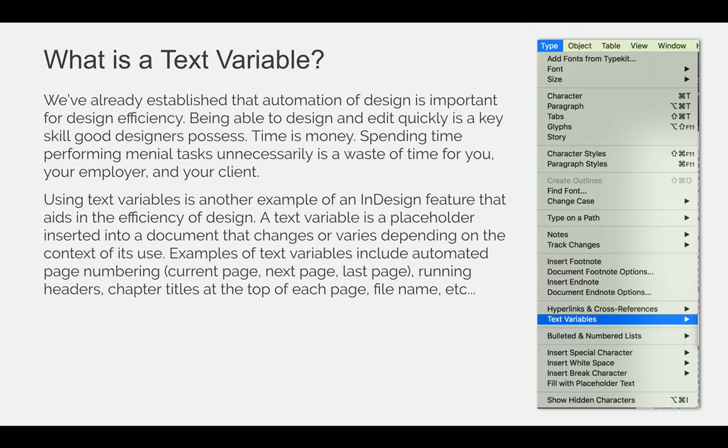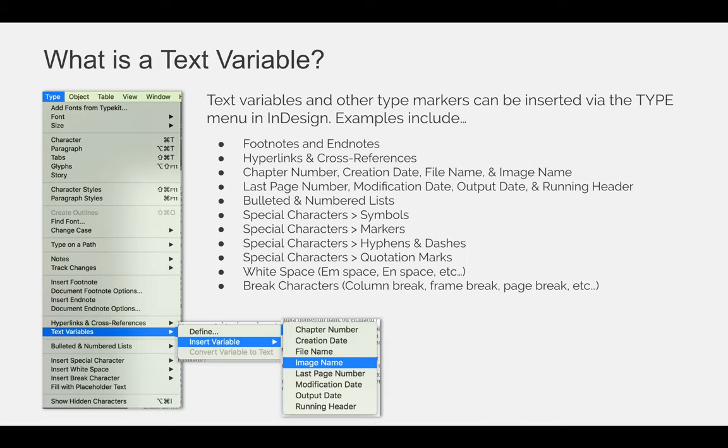Examples of text variables include automatic page numbering — you can automate the current page number, the next page number, or the last page number. You can also use running headers and chapter titles at the top of each page, file names, and more. Text variables and other type markers can be inserted via the Type menu in InDesign, as shown in the screenshot. You would go to Type > Text Variables > Insert Variable.